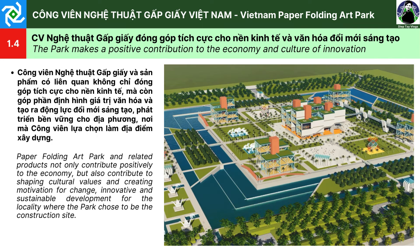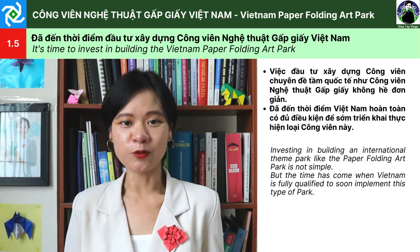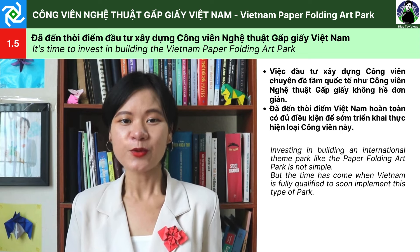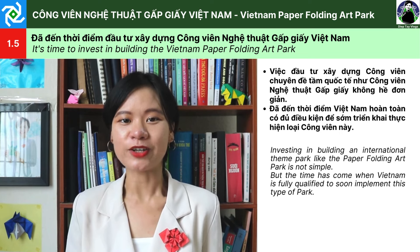1.4. Công viên nghệ thuật gấp giấy đóng góp tích cực cho nền kinh tế và văn hóa đổi mới sáng tạo. Công viên nghệ thuật gấp giấy và sản phẩm có liên quan không chỉ đóng góp tích cực cho nền kinh tế, mà còn góp phần định hình giá trị văn hóa và tạo ra động lực đổi mới sáng tạo, phát triển bền vững cho địa phương nơi mà công viên lựa chọn làm địa điểm xây dựng. Việc đầu tư xây dựng công viên chuyên đề tầm quốc tế như công viên nghệ thuật gấp giấy là việc không hề đơn giản, song cũng đã đến thời điểm Việt Nam hoàn toàn có đủ điều kiện để sớm triển khai thực hiện loại công viên này.